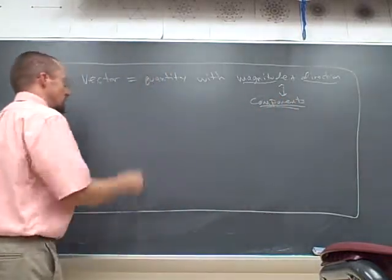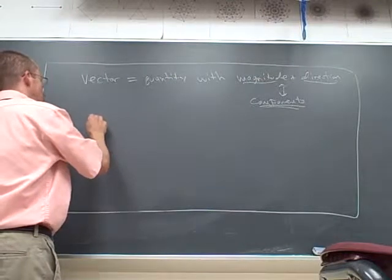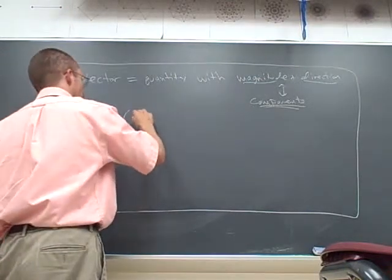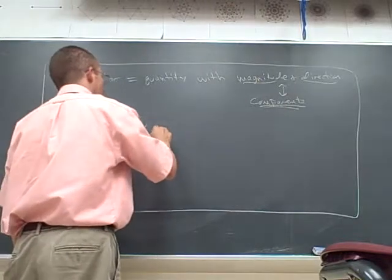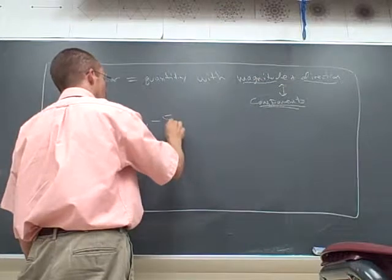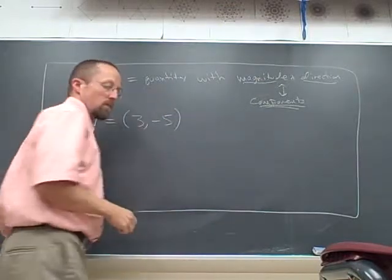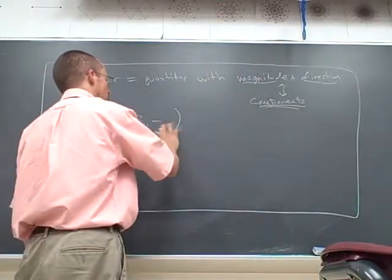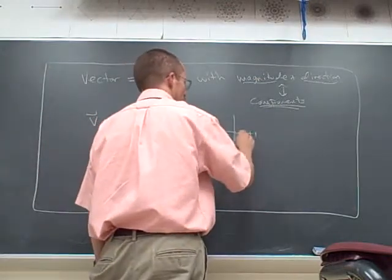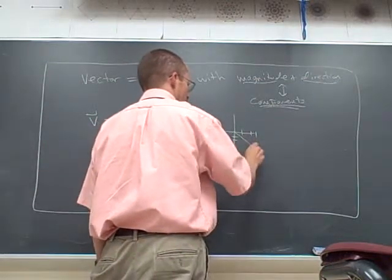So for example, if I have vector v is 3, minus 5. Actually, let's start with a really simple one. 3, minus 3. So it goes 1, 2, 3 over, 1, 2, 3 down. That's the vector.